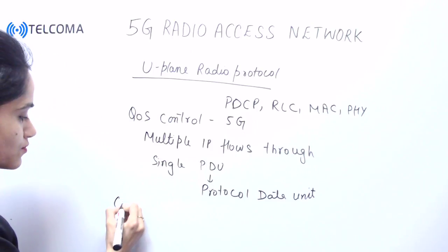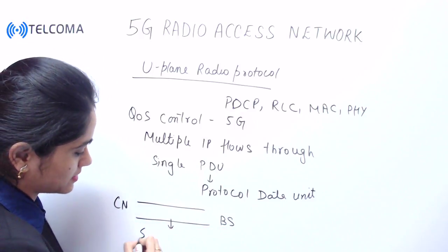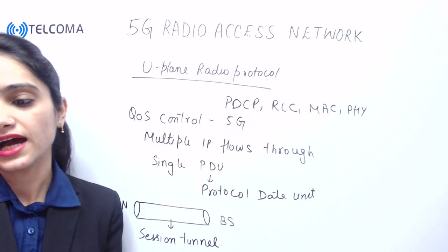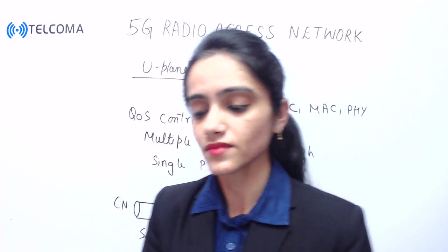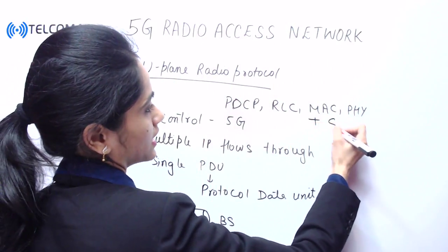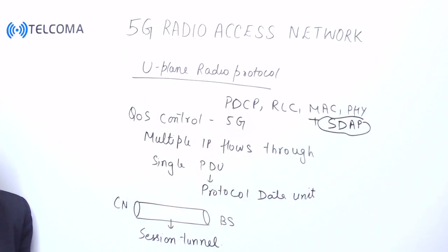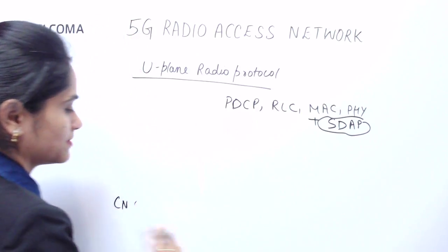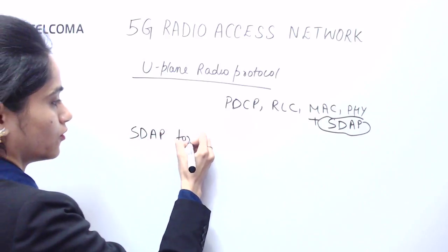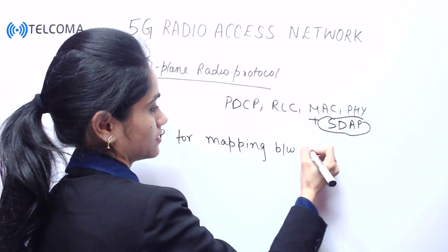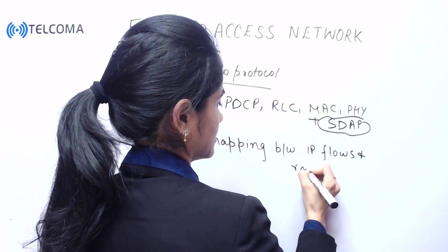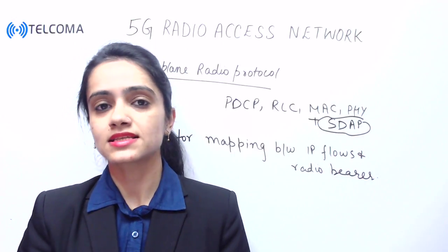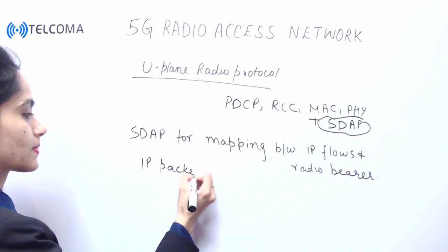We require a session tunnel between the core network and the base station so that it can have radio bearer mapping. For this, a new layer needs to be introduced — the SDAP layer. This layer is introduced so that it can perform mapping between the IP flows and the radio layer. In the SDAP layer, IP packets are encapsulated and the header contains the quality of service information for those packets.